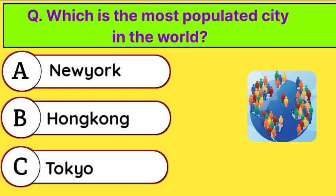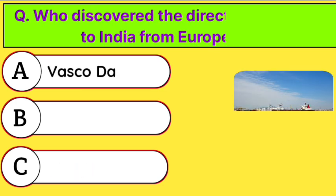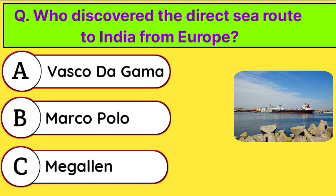Which is the most populated city in the world? Correct answer is option C. Tokyo. Who discovered the direct sea route to India from Europe? Correct answer is option A. Vasco da Gama.